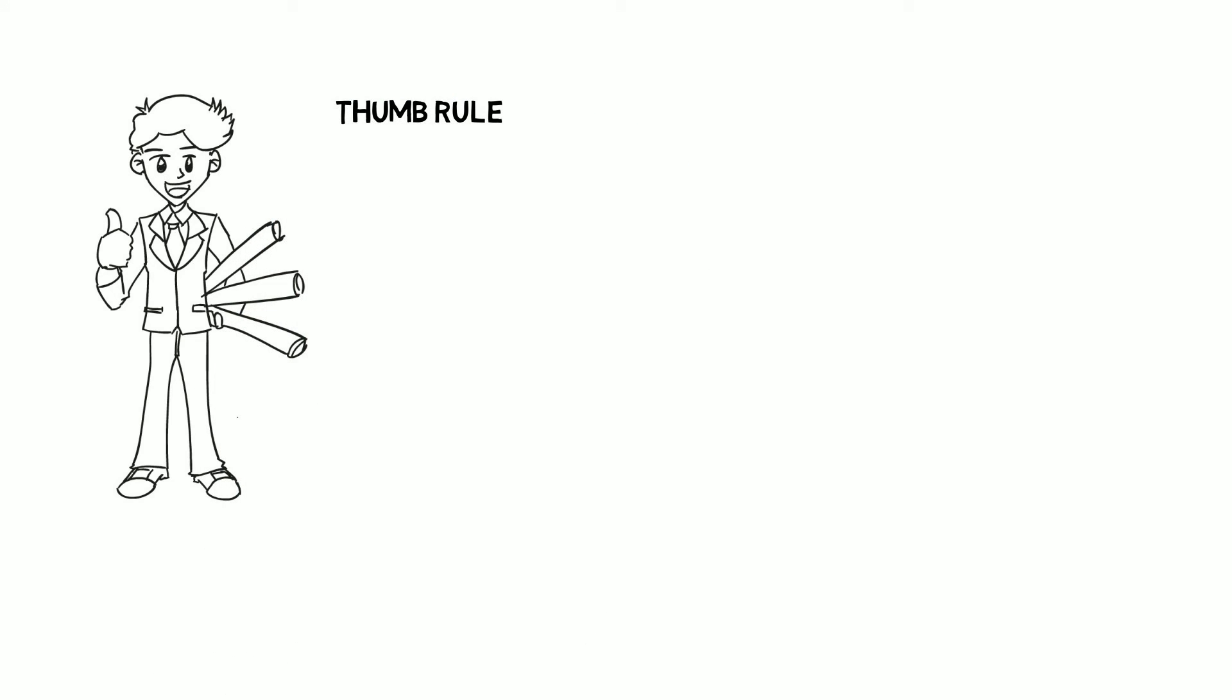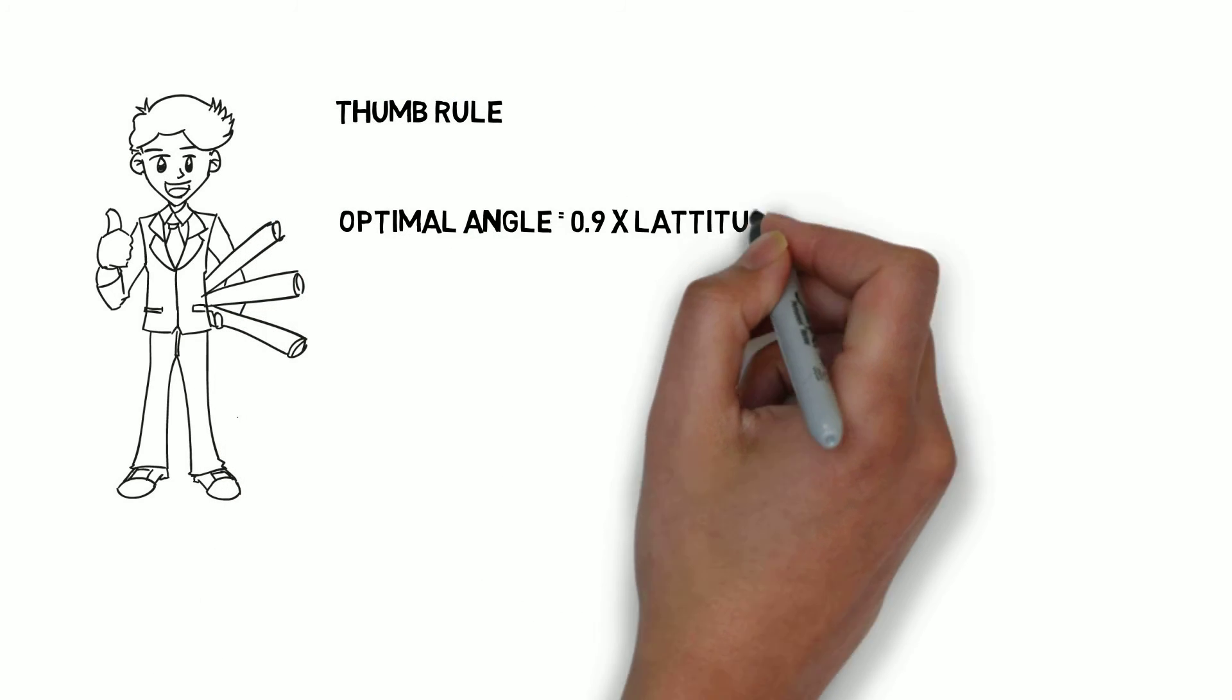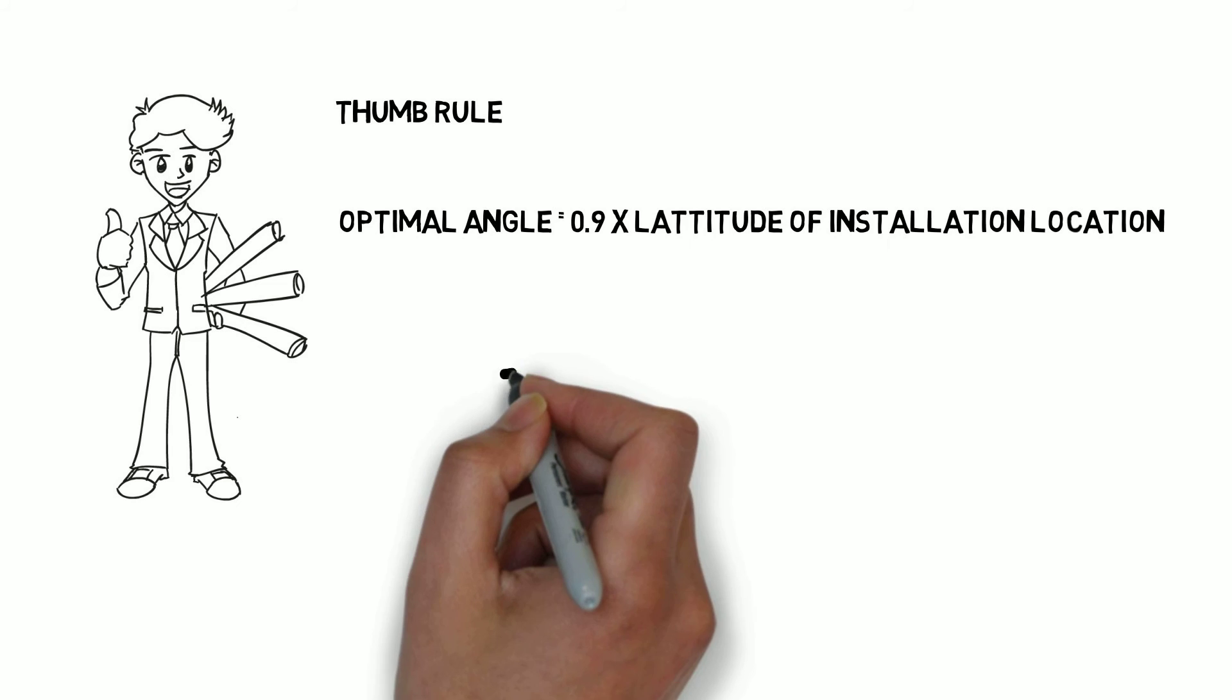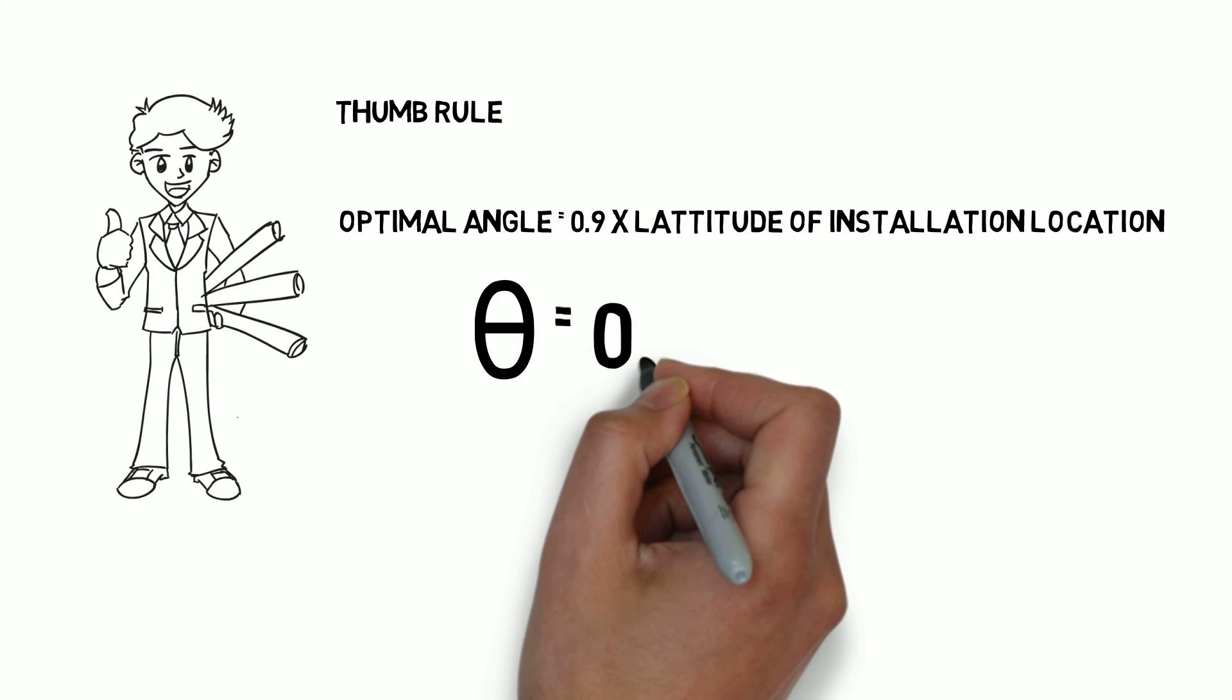Generally, a thumb rule exists among the installers that 0.9 times the latitude of a location can provide the value of the best angle. So 0.9 times the latitude, and although it is to an extent true, it is a very crude approximation.